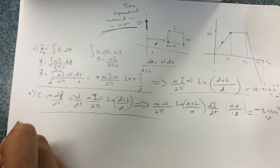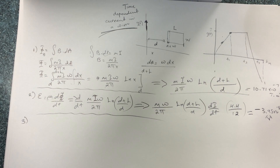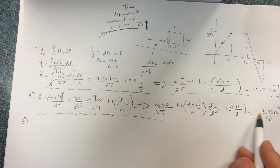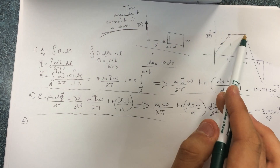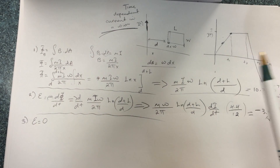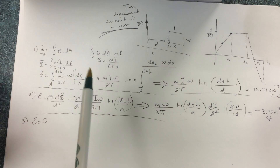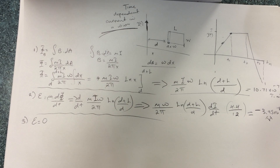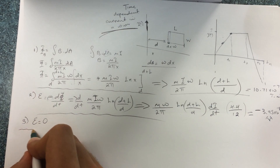Number 3: what is the EMF induced at time equals 14? At t = 14, the graph is flat — that region has a slope of zero. So dI/dt = 0, which means no change in current, which leads to no change in flux, which means the induced EMF is zero.